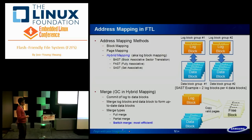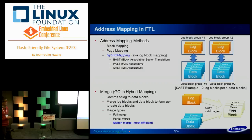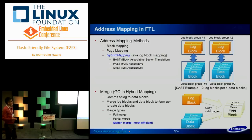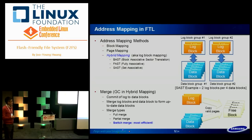Hybrid mapping can achieve high performance like page mapping if there is enough access locality — both spatial and temporal. Its mapping table requirement is very small. This is a very promising architecture for mobile flash storage especially. There are three address mapping variants in the hybrid mapping category: block-associative sector translation, fully associative, and set-associative.